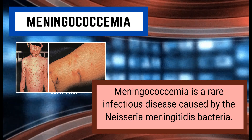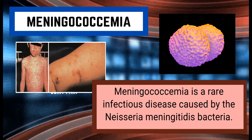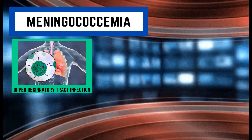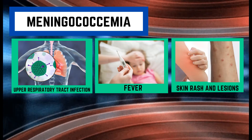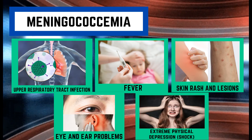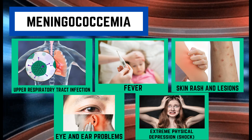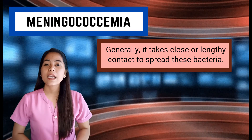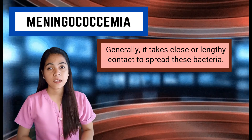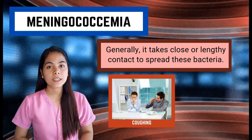Next we have Meningococcemia. Meningococcemia is a rare infectious disease caused by the Neisseria meningitidis bacteria. It causes upper respiratory tract infection, fever, skin rash and lesions, eye and ear problems, and possibly a sudden state of extreme physical depression which may be life-threatening without appropriate medical care. Generally, it takes close or lengthy contact to spread this bacteria, for example through coughing and kissing.